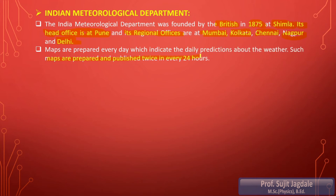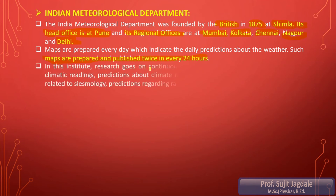Maps are prepared every day indicating daily predictions about the weather. These maps are prepared and published twice every 24 hours, giving predictions about the weather for the next 12 hours — whether it will be hot, cold, rainy, cloudy, or sunny. You can also visit the website www.imdpune.gov.in where these maps are published twice a day.